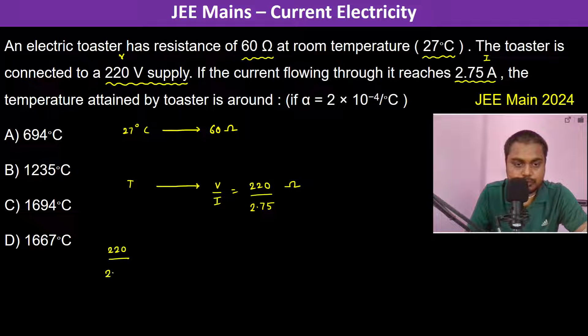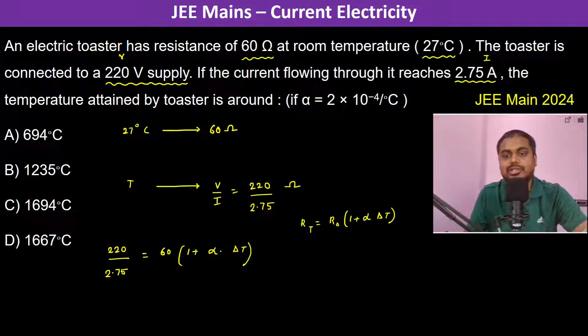...is equal to 60 into 1 plus alpha into Delta T. Basically we have used this formula: R at T equals R naught times 1 plus alpha into Delta T. So this is the new resistance.